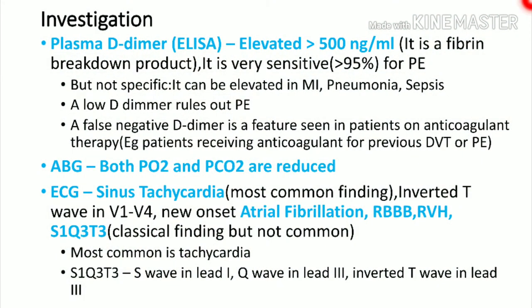In a suspected pulmonary embolism presenting with cough, breathlessness, tachypnea, and tachycardia, first take an ABG. Most patients will have slightly low PaO2 and low PaCO2 due to hyperventilation. ECG mostly shows sinus tachycardia and may show atrial fibrillation, RBBB, or RVH. In massive pulmonary embolism, the classic S1Q3T3 pattern may be seen — S wave in lead I, Q wave in lead III, T-wave inversion in lead III — though this is not present in all cases.